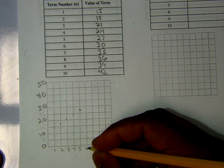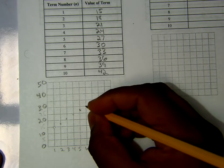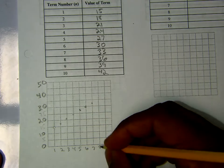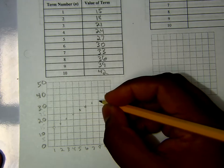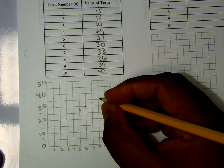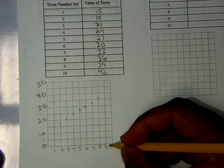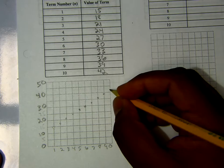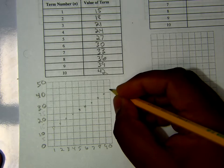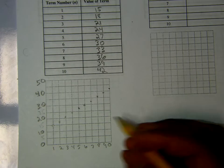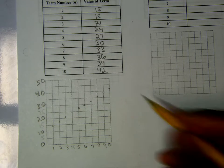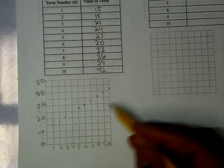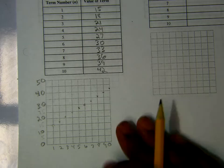6 will be 30. 7 will be about 33. 8 will be about 36. And 9 will be real close to 40. And then last, we have 42. So this is graphing an arithmetic sequence here. Notice you have a straight line because it's a linear function.